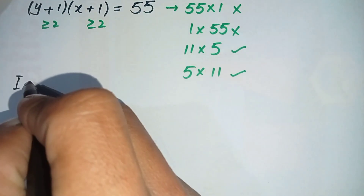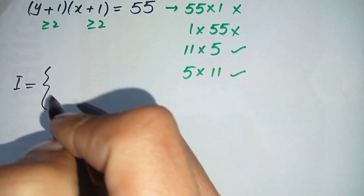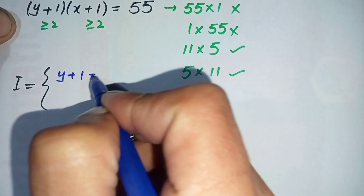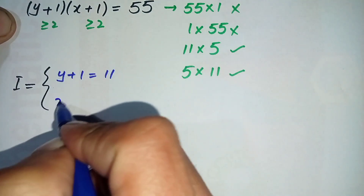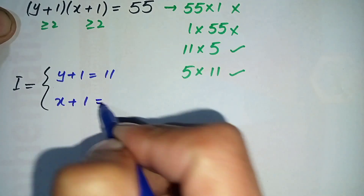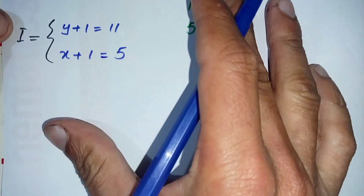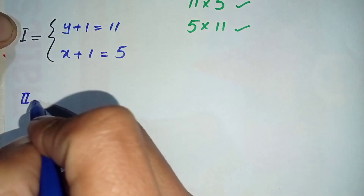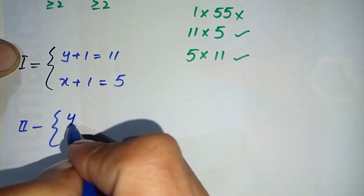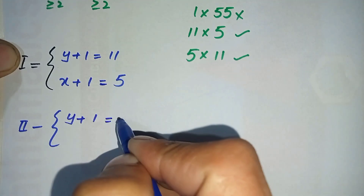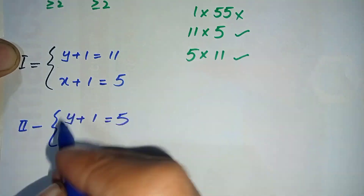Case 1: y + 1 = 11 and x + 1 = 5. Case 2: y + 1 = 5 and x + 1 = 11.